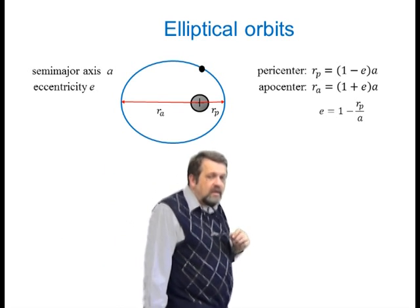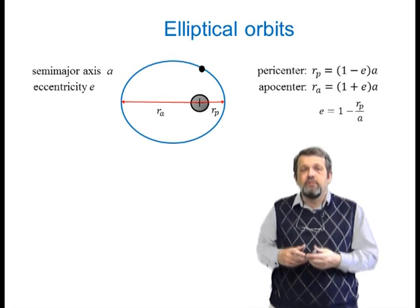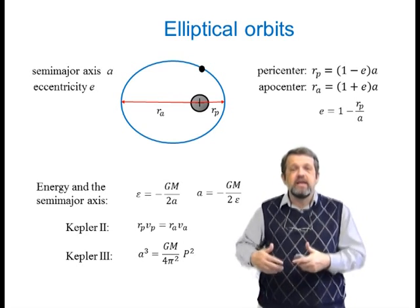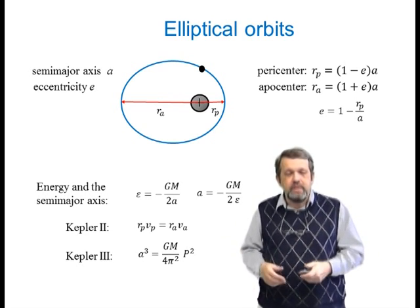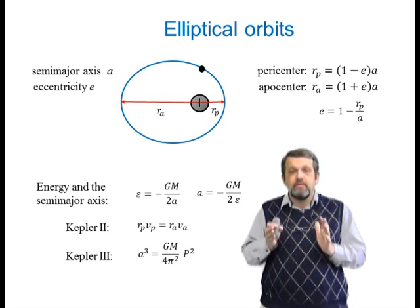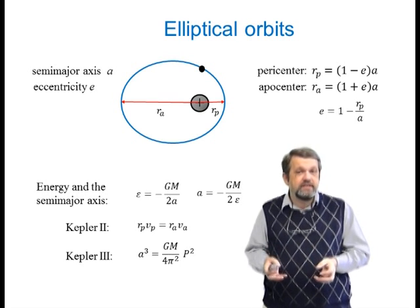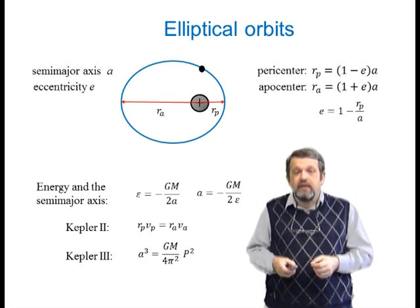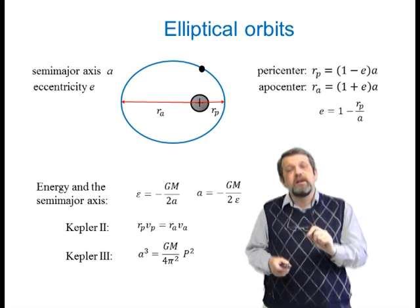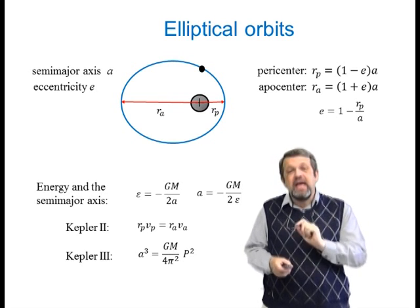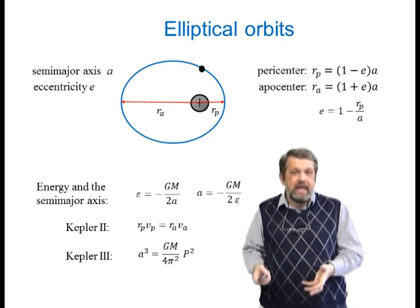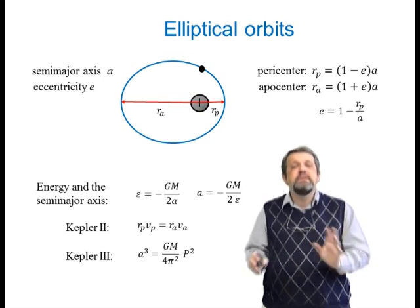There are a number of relations between the shape of the ellipse and dynamical quantities like speed, time, and energy. The most useful is the relation between the semi-major axis and the specific energy: ε = −GM/2a, or equivalently a = −GM/(2ε). This is a tremendously useful relation that we use all the time.